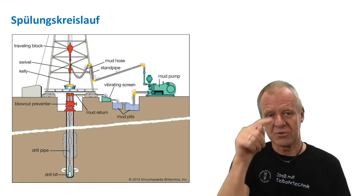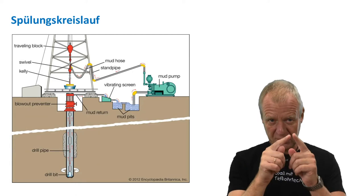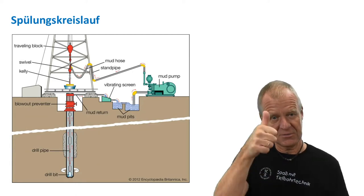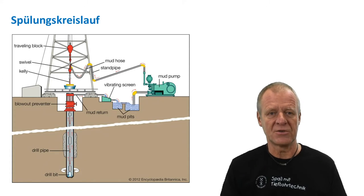The mud pump pumps the drilling mud through the drill string into the borehole. It removes the cuttings from the bottom of the borehole and carries them up through the annulus between the drill string and casing to the surface.